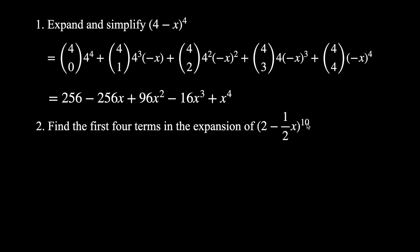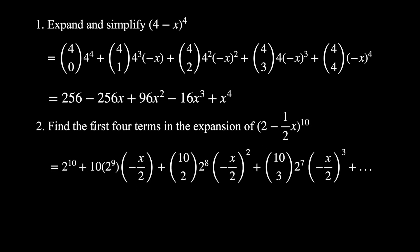The second example: find the first four terms in the expansion of (2 − x/2)^10. When a binomial expansion has a higher power, exam questions typically ask for just the first four terms or some specific terms rather than the whole expansion. Note that you can have absolutely any two terms in these brackets — the only restriction is that the exponent must be a positive whole number to use this particular theorem.